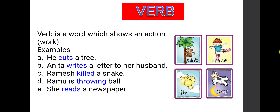Second example: Anita writes a letter to her husband. What is her action here? Writes. So writes will become a verb. Next example: Ramesh killed a snake. What is his action here? Killed. So killed will become a verb.